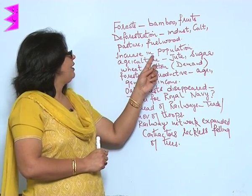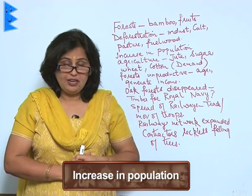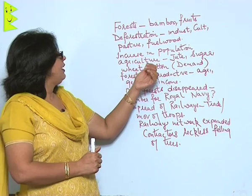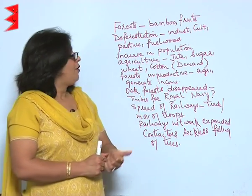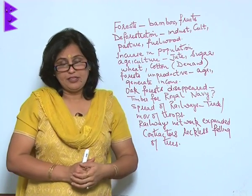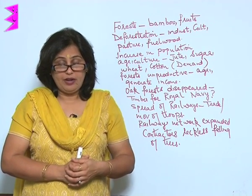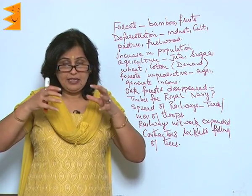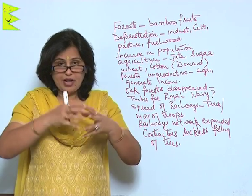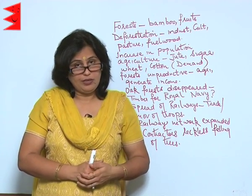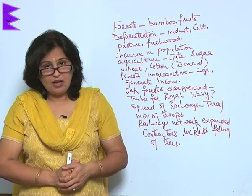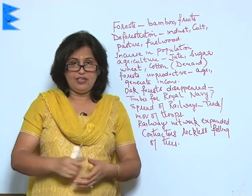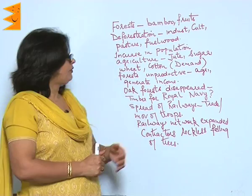The first thing was an increase in population. The population increased rapidly in India and in Britain at that time, which meant that agricultural production had to be increased — whether it was jute, sugar, wheat, or cotton. All these cash crops were in great demand in Britain and had to be grown more and more. To meet that demand, they started clearing the trees and forests for agricultural use.